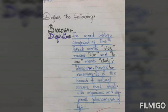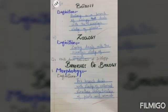Our first question is: define the following. Number one — Biology. It is our main heading and you will write it by your black cut marker. Definition is our side heading and you will write it by your blue cut marker. Now write down the definition, it will be centralized. The word biology is composed of two Greek words — bios means life, and logos means study, discourse, thought or reasoning. It is the branch of natural science that deals with organisms and different phenomena of life.